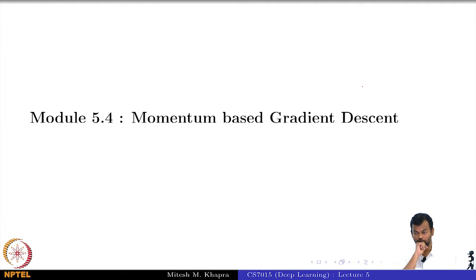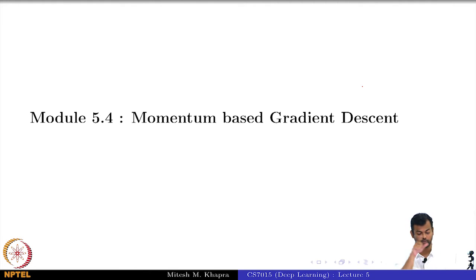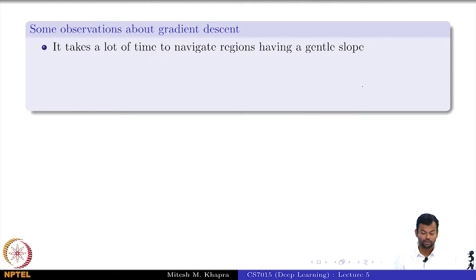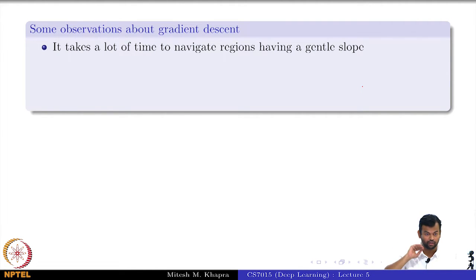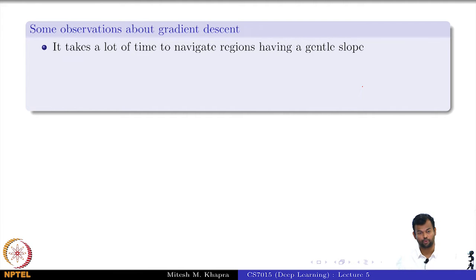In this module we will look at momentum-based gradient descent. One key observation about gradient descent is that it takes a lot of time to navigate regions having a gentle slope.